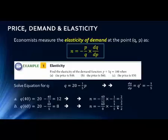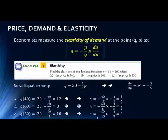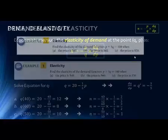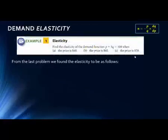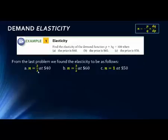The derivative is a constant, negative one-fifth. For the last problem, when we plug in a price of 50, we get q equals 10. Plugging all those values in — negative p (50) over q (10) times dq/dp (negative one-fifth) — we get an elasticity equal to 1. So our three values are: two-thirds when the price was 40, three-halves when the price was 60, and 1 when the price was 50.